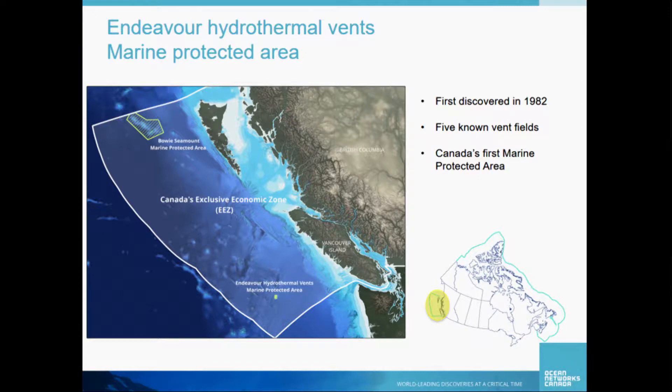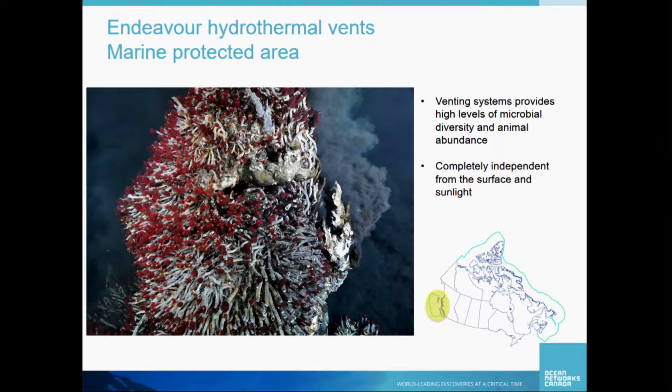Within the Endeavour MPA there are five known vent fields, and they have really interesting names because the scientists just come up with crazy names — there's Salty Dog, Sasquatch, Mothra, and Main Endeavour field. What's interesting about these vent fields is that they're basically unique areas where hydrothermal vents erupt from the seafloor. Picture yourself kind of like on Mars — it's super barren and then out of nowhere come these 30-metre stacks, up to 100 feet, of these spire-like structures. These huge vents come up and there's sometimes black smoke, clear smoke, various types of species.